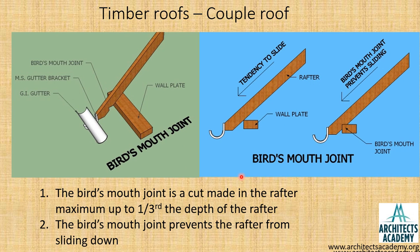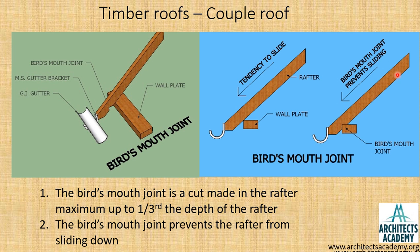Now let us understand what is meant by the bird's mouth joint. The bird's mouth joint is made to prevent the tendency of the rafter to slide down. In the sketch, if the rafter is simply rested on the wall plate without any joint, it will easily slide down and the wall plate will not be able to stop it. So the rafter is cut in the form of the beak of a bird, forming the bird's mouth joint, which prevents the rafter from sliding.